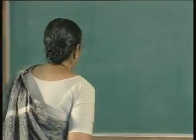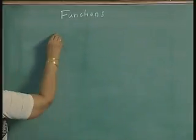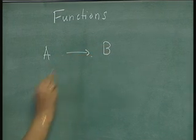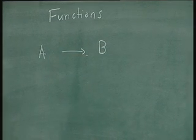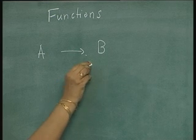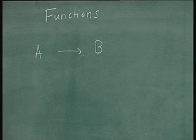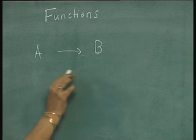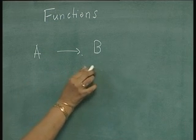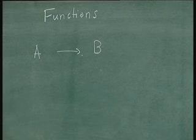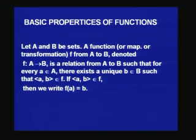Today we shall learn about functions. A function from a set A to a set B is a rule which connects an element of B with every element of A. It is a rule which specifies one element of B with each element of A. Let us see the formal definition of a function.